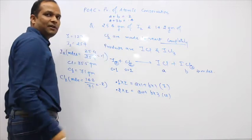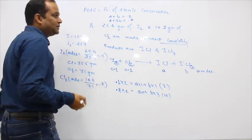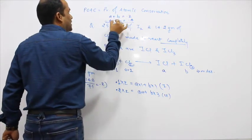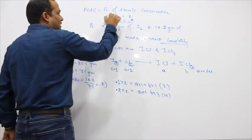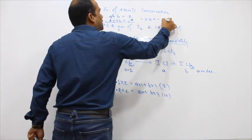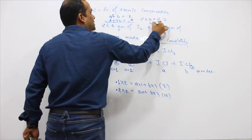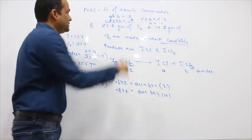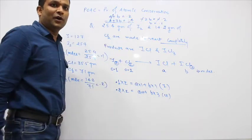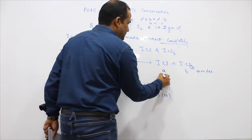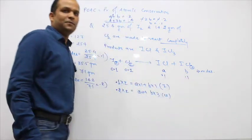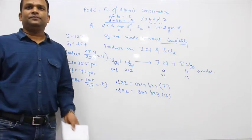Two equations, two variables — we can solve. From A + B = 0.2 and A + 3B = 0.4, solving gives: moles of ICl = 0.1 and moles of ICl₃ = 0.1.